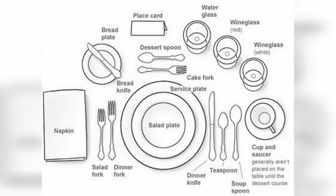In today's class we are going to look into the table setup. We have already covered in our chapters the different types of cutlery, crockery, glassware, tablecloth, and napkins — the linen that is being used. So we are now aware about all the things that are being used for a table setup.